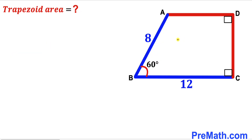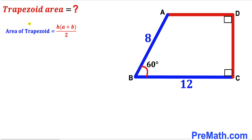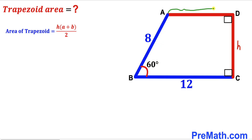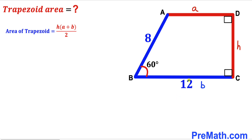Let's get started. Since we are interested in calculating the area of trapezoid ABCD, let's recall the area of a trapezoid formula: Area equals height H times the sum of bases A plus B, all over 2. Here CD is our height H, base lowercase a is the top base AD, and base lowercase b is BC, so our b value is 12.